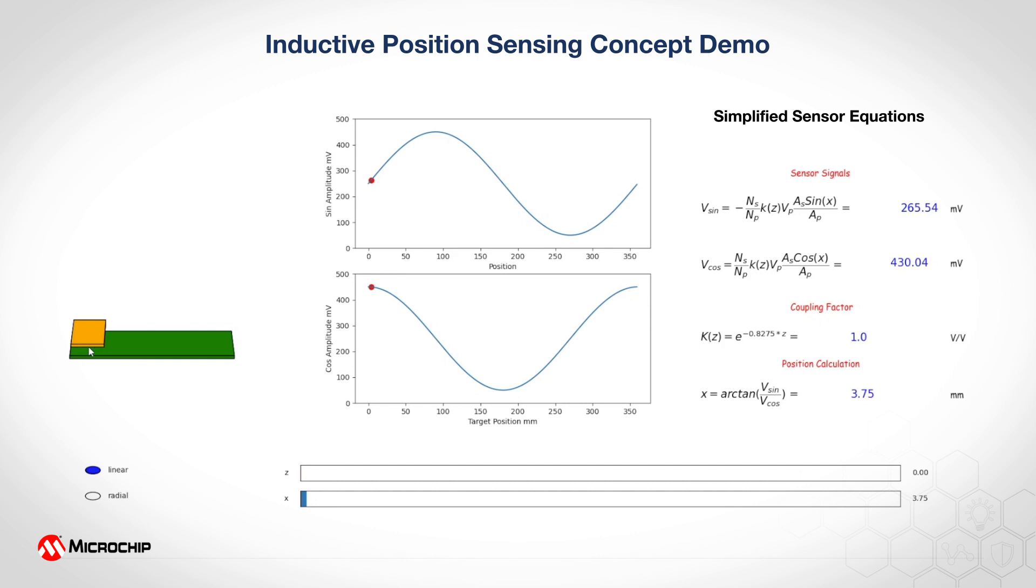Once we figure out the position of the disturbance relative to the length or the shape of the sensor, we'll be able to essentially figure out the position of the metal target. This is a really neat concept and this is a really effective and powerful tool to measure metal presence on an inductive coupling of transformer system.